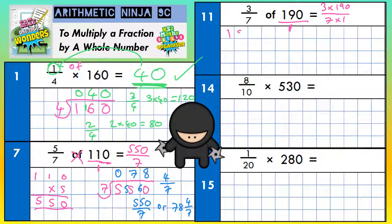Well, 3 times 190, you might need a quick column method for. 3 nothings are nothing, 3 nines are 27, put 7 in, carry the 2. 3 ones are 3, plus the 2 is 5. So that makes 570 along the top, and the bottom's easy, 7 times 1 is 7. So as an improper fraction, we've got 570 7ths.